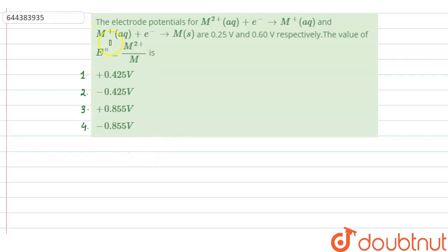Hello everyone, let us solve this question. The question says that the electrode potentials for M²⁺(aq) + e⁻ → M⁺(aq) and M⁺(aq) + e⁻ → M(s) are 0.25V and